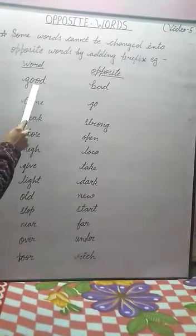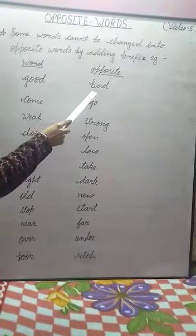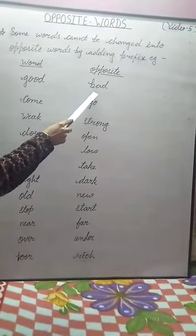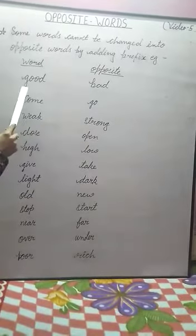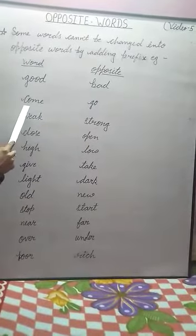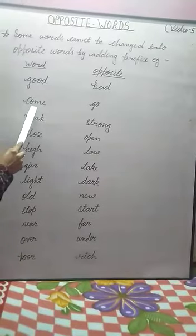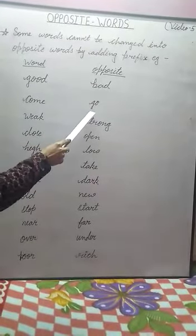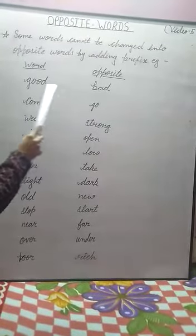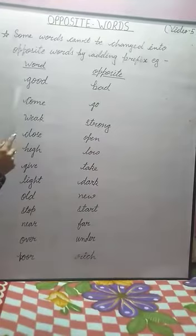Good. The opposite of good is bad, and the opposite of bad is good. Come. The opposite of come is go, and the opposite of go is come.